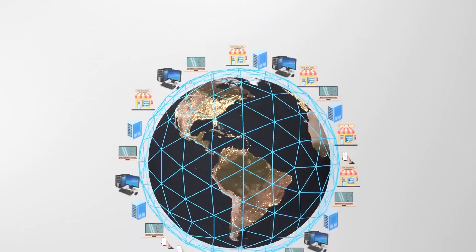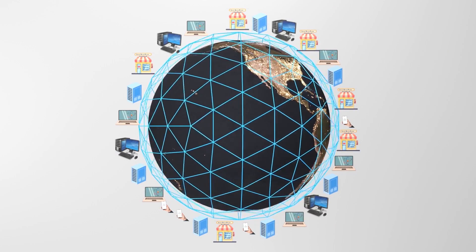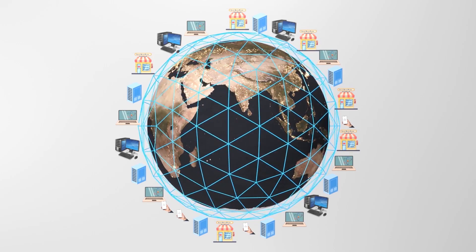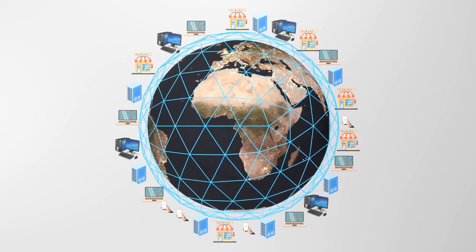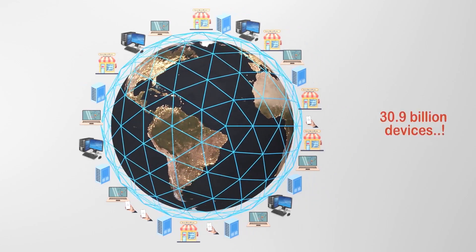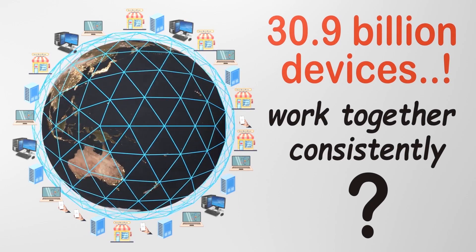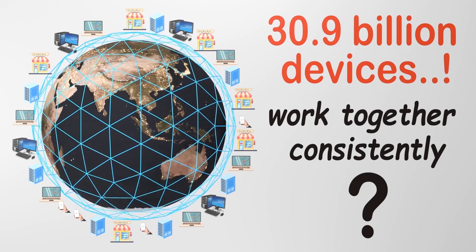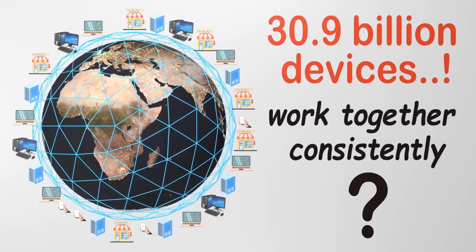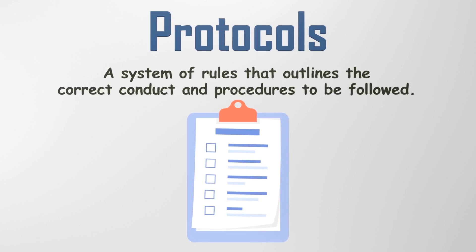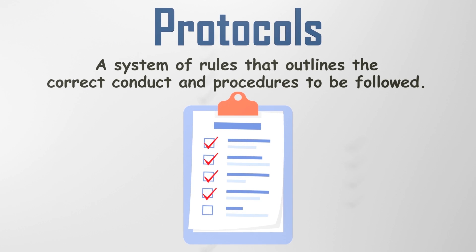Now let's dive further deep. There are currently more devices connected to the Internet than there are people in the world. It is estimated that there will be 30.9 billion devices connected to the Internet worldwide in 2023. How do these numerous devices work seamlessly with each other? The secret lies in protocols. By definition, a protocol is a system of rules that outlines the correct conduct and procedures to be followed.